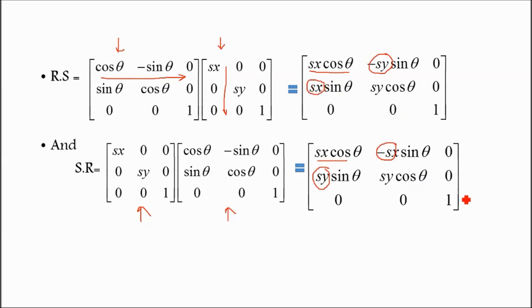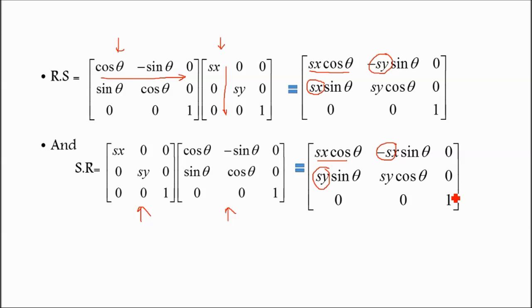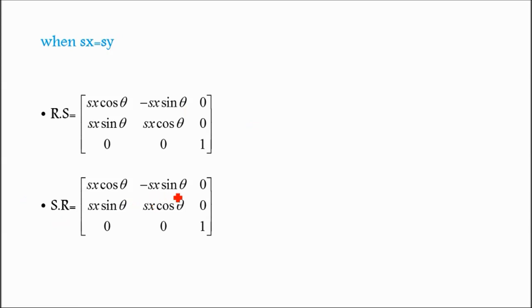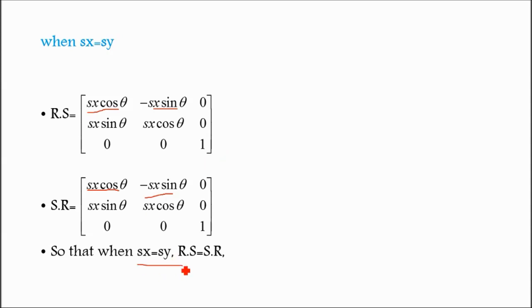Without any condition, the two matrices are not equal. The first condition is: if sx equals sy, then substituting sx everywhere in place of sy, RS becomes sx·cos-theta, minus sx·sin-theta, 0; sx·sin-theta, sx·cos-theta, 0; 0, 0, 1 — which is identical to SR. So RS equals SR when sx equals sy, proving commutativity.